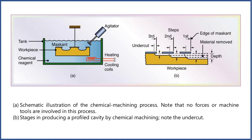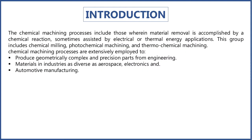This group includes chemical milling, photochemical machining, and thermochemical machining. These chemical machining processes are extensively employed for producing geometrically complex and precision parts from engineering materials in industries as diverse as aerospace, electronics, and automotive manufacturing.